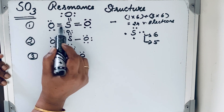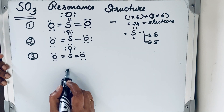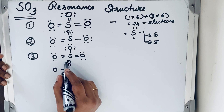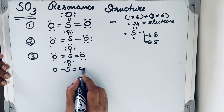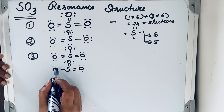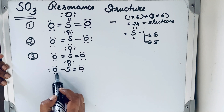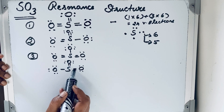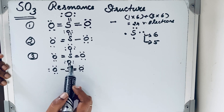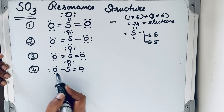The same way, we convert the remaining double bond to a single bond for the fourth resonating structure — now each S–O is a single bond except one double bond on the third oxygen. All octets are satisfied, and the 24 valence electrons are verified. This is the fourth resonating structure.